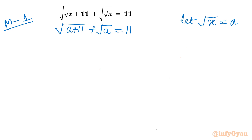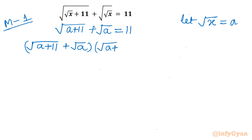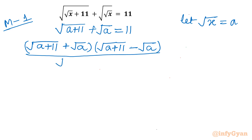Now I will rationalize our LHS. We have square root of (a plus 11) plus square root of a, and I will multiply numerator and denominator by square root of (a plus 11) minus square root of a. So we have multiplied numerator and denominator by square root of (a plus 11) minus square root of a, equal to 11.